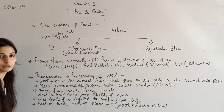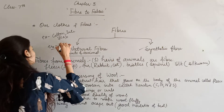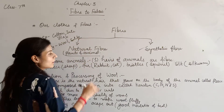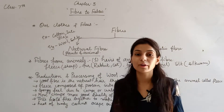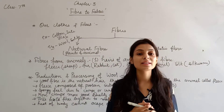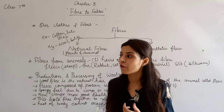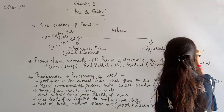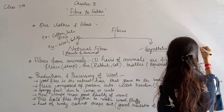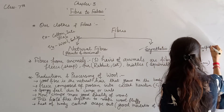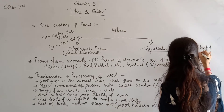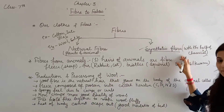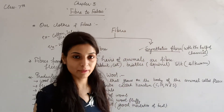Animal fiber is obtained from animals — for example, Silk. Next is Synthetic Fiber. Synthetic fibers are made with the help of chemicals. They are man-made fibers. An example is Rayon.